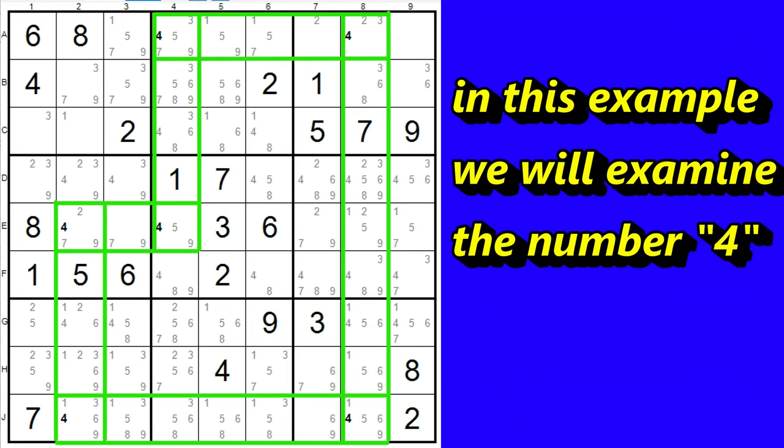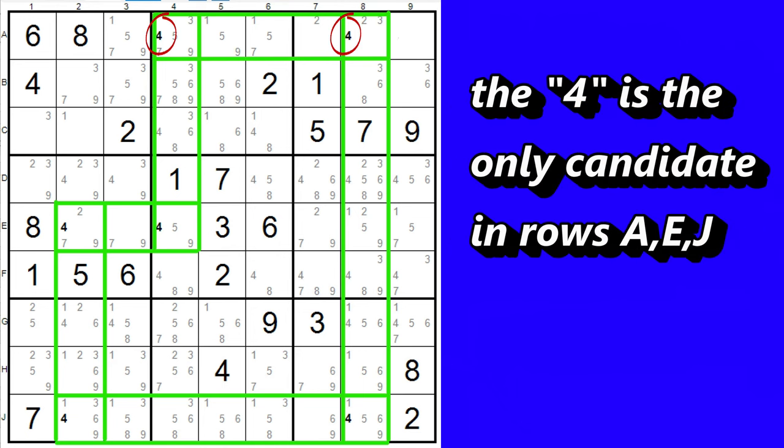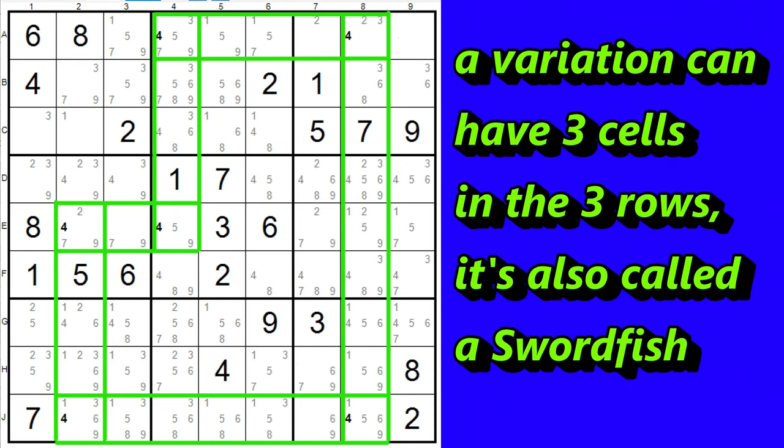In this example, we are looking at the candidate 4. It appears as the only candidate in two cells in three rows, row A, row E, and row J. A variation that is also called a swordfish can have three cells in the three rows. I'll show you that after we look at this more simple version.